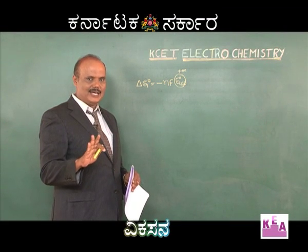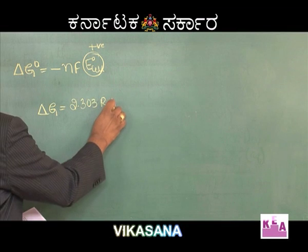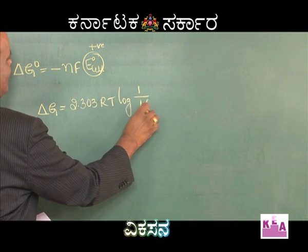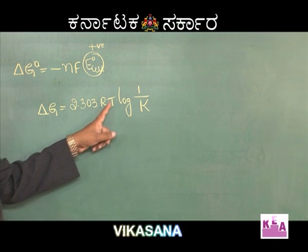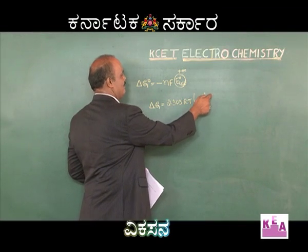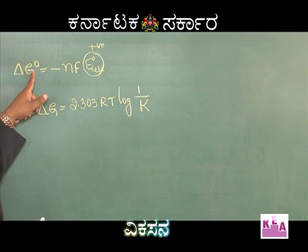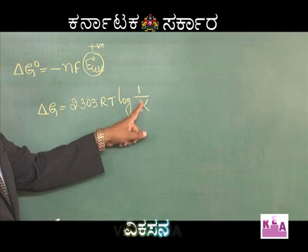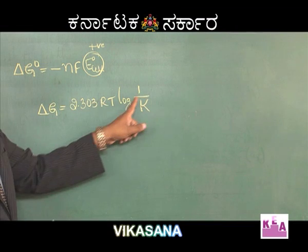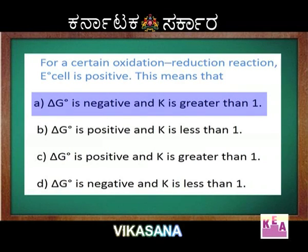One more relation: ΔG° = −2.303RT log K. According to this, a higher value of K gives a lesser ΔG° value. So to get ΔG° less than zero, K should be greater than 1 — if K equals 1, log 1 becomes 0. Therefore, when E°cell is positive, ΔG° is negative and K is greater than 1. Option A — ΔG° is negative and K is greater than 1 — is correct.